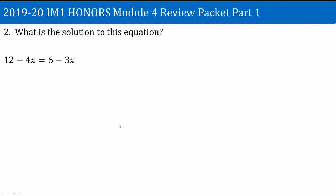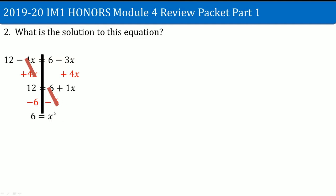Problem 2: what is the solution to this equation? Same process — draw the line straight down, move the smallest variable. Here, negative 4x is the smallest, so add 4x to both sides; that cancels out. The 12 comes straight down on the left. On the right, negative 3x plus 4x becomes 1x. Subtract 6 from both sides — that cancels out, giving 1x equals 12 minus 6, which is 6.